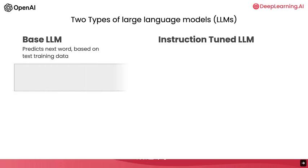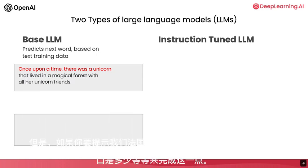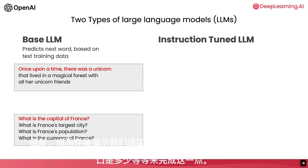So for example, if you were to prompt this with "once upon a time there was a unicorn," it may complete this — it may predict the next several words are "that live in the magical forest with all unicorn friends." But if you were to prompt it with "what is the capital of France," then based on what articles on the internet might have, it's quite possible that the base LLM will complete this with "what is France's largest city? What is France's population?" and so on, because articles on the internet could quite plausibly be lists of quiz questions about the country of France.